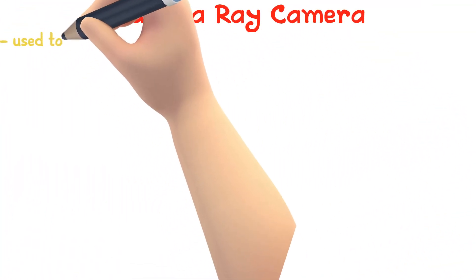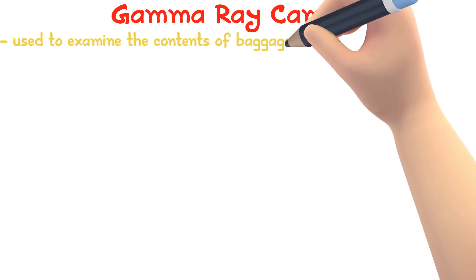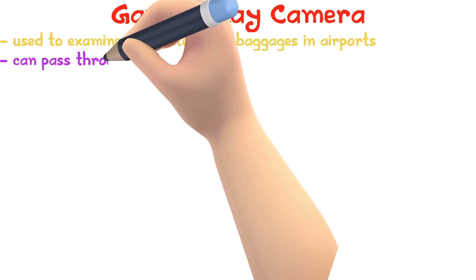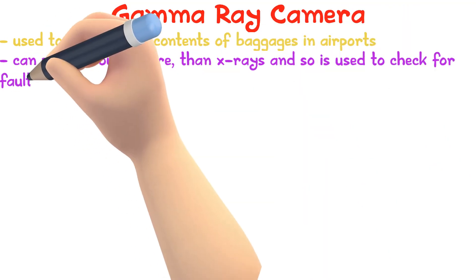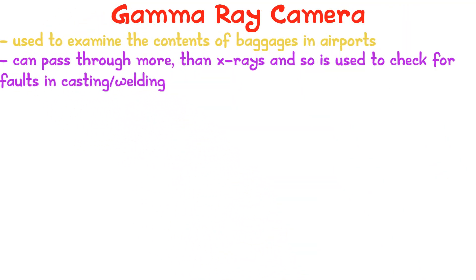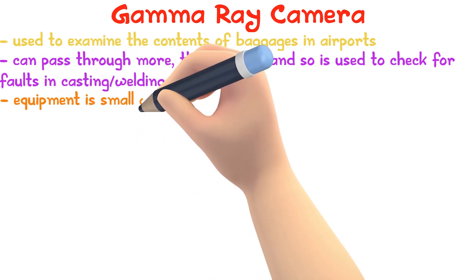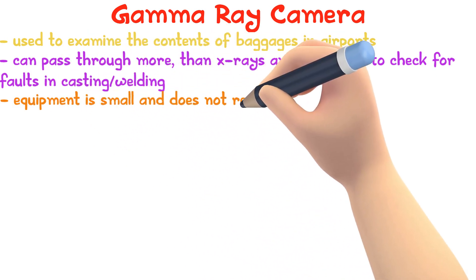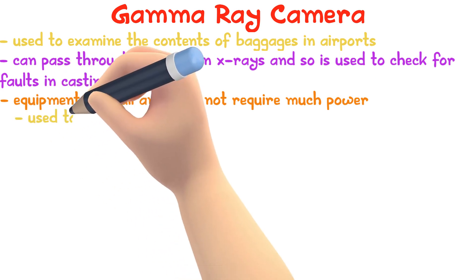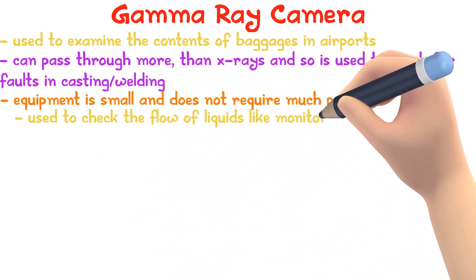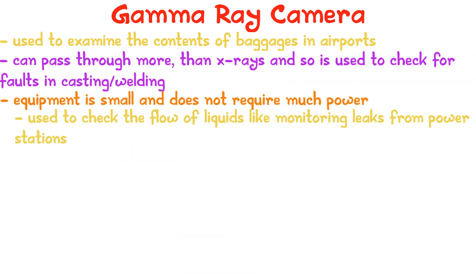Gamma rays are used to examine the contents of baggage in airports. Gamma rays can pass through more objects than x-rays and so can be used to check for faults when casting or welding. Gamma ray equipment is small and does not require a lot of power. Radioactive isotopes can also be used to check the flow of liquids, like monitoring leaks from power stations, and radioactive tracers can measure the rate of the spread of sewage.